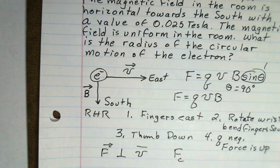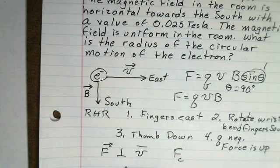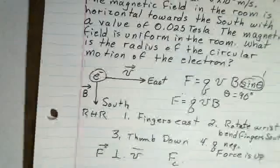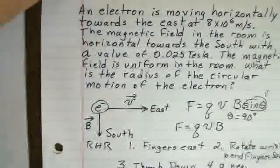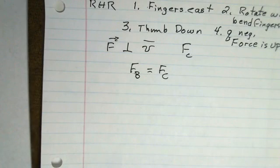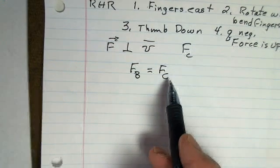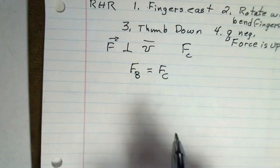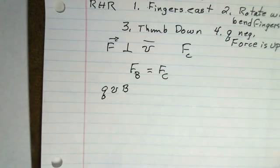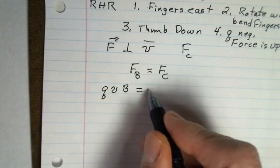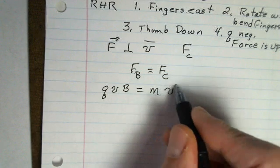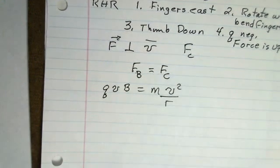The magnetic force is supplying the centripetal force. We're going to work out now the algebra. Magnetic force equals centripetal force. The magnetic force is Q times velocity times B. Our centripetal force is the mass of the object moving in the circle times V squared divided by the radius of the circle.